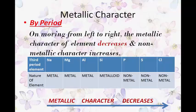Taking the third period as an example: sodium, magnesium, and aluminium are metals. Silicon, whose properties are intermediate between metals and non-metals, is a metalloid. Phosphorus, sulfur, and chlorine are non-metals. So metallic character decreases from sodium to magnesium to aluminium; silicon is a metalloid; and non-metallic character increases from phosphorus to sulfur to chlorine. In the third period, sodium is the most metallic element, whereas chlorine is the most non-metallic. The greatest metallic character is found in elements on the extreme left side of the period, and the greatest non-metallic character is found on the right side.